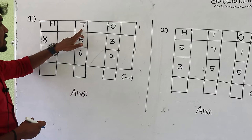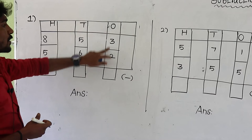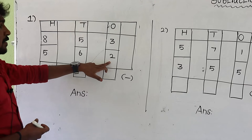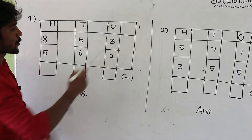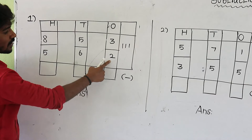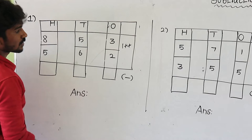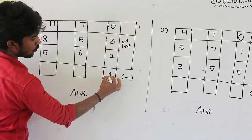So ones value — compare the two numbers. Upper value is the greatest number, lower value is the smallest number. So this subtraction is possible. Upper value is 3, so draw three lines: 1, 2, 3. Lower value is 2, so cancel two lines: 1, 2. Count remaining lines — only 1. So write the answer here: 1. So 3 minus 2 is equal to 1.